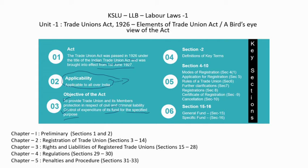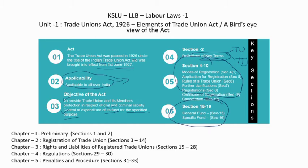The key sections of the act include Section 2, which deals with definitions of key terms — notably the definition of trade union and trade dispute. The second important area covers registration sections (Sections 4 to 10), dealing with registration and cancellation of registration. The other important area is management of funds, covered in Sections 15 and 16 — one is the general fund and the second is the specific fund.